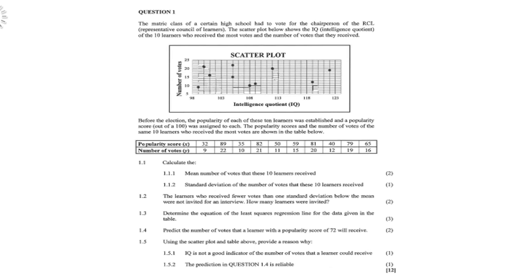So you must calculate the mean number of votes, the standard deviation of the numbers. The learners who received fewer votes at one standard deviation below the mean were not invited for an interview. How many learners were invited?